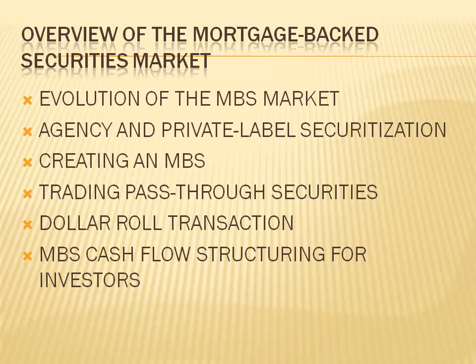Agency CMOs are established with an underwriter purchasing agency MBS, which are placed in a trust. Different tranches are created for principal and interest from the MBS pool. Private-label CMOs are established by transferring many loans into securitized vehicles; the securitized transaction CMO is then created by the issuer.